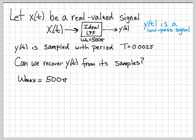As usual for these types of problems, what's important is the maximum frequency content of the signal that we're sampling. In this case, since y of t was generated by a low-pass filter with cutoff frequency 500 pi, the largest possible radial frequency of y of t is 500 pi, so omega max equals 500 pi.